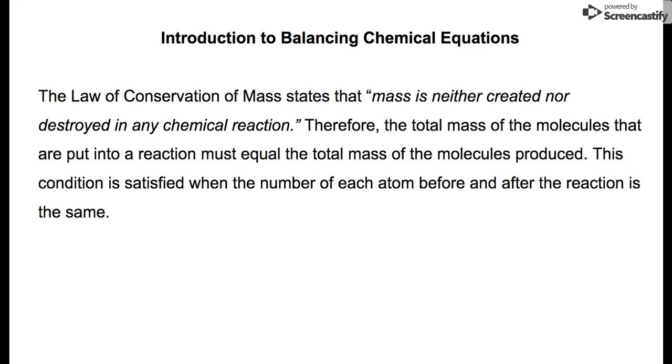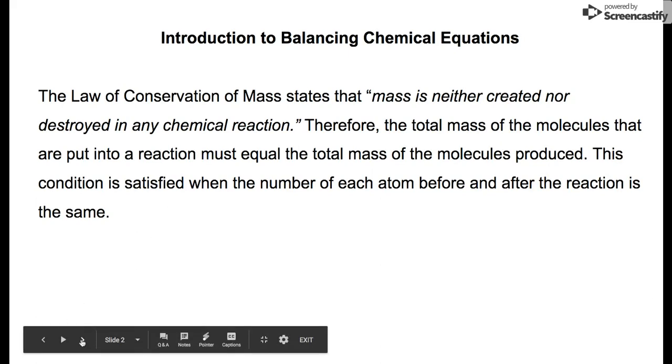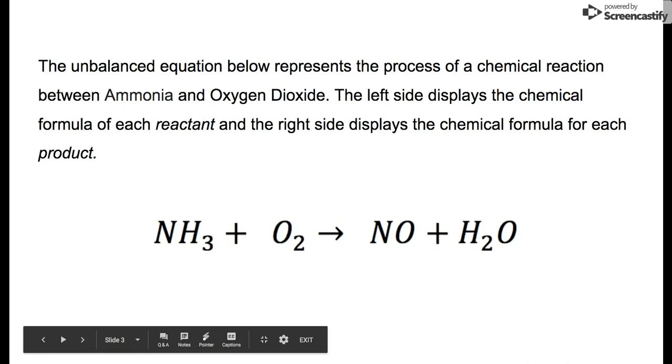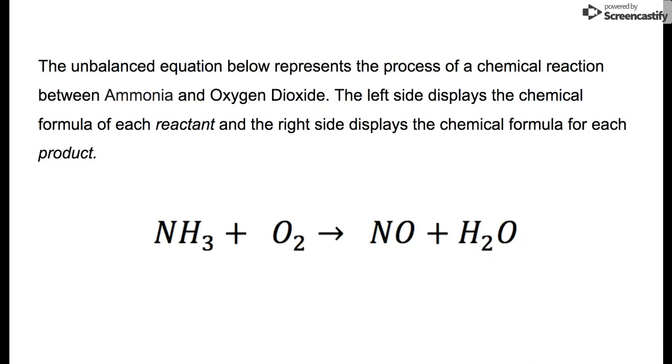This condition is satisfied when each atom has the same number going into reaction that is produced after the reaction. So if we have two nitrogen atoms going into a chemical reaction, we have to have two nitrogen atoms produced from the equation.